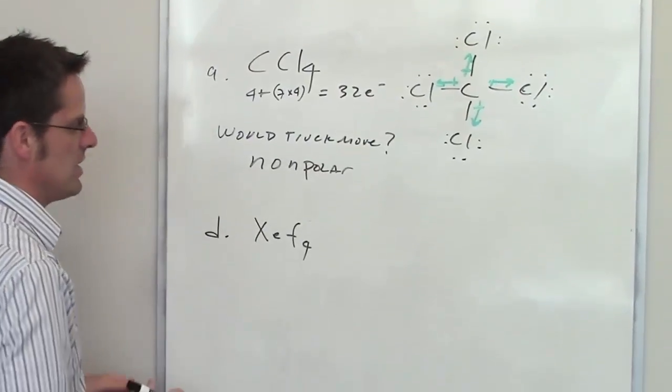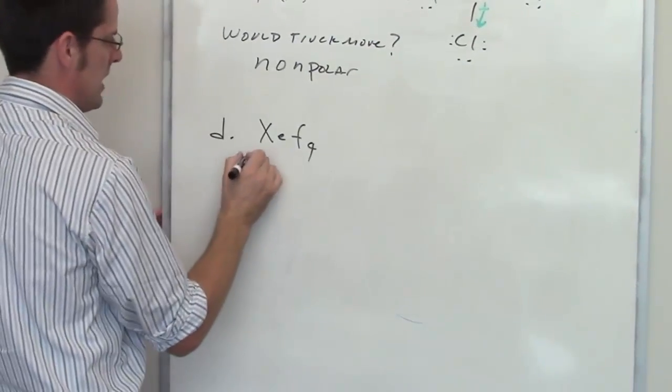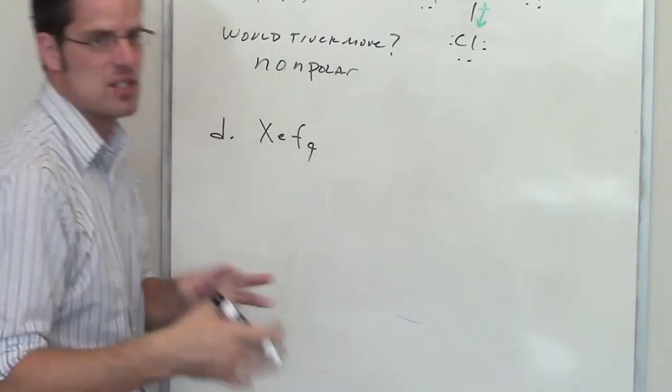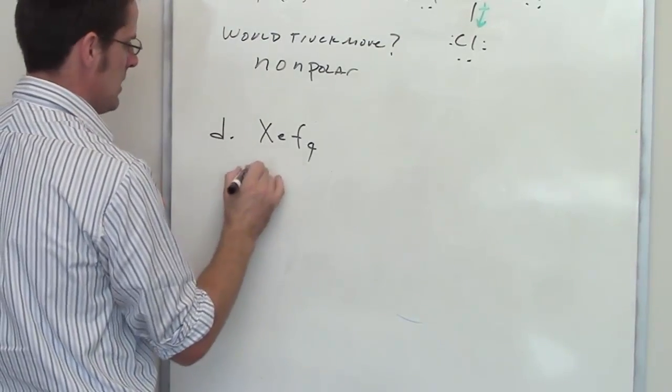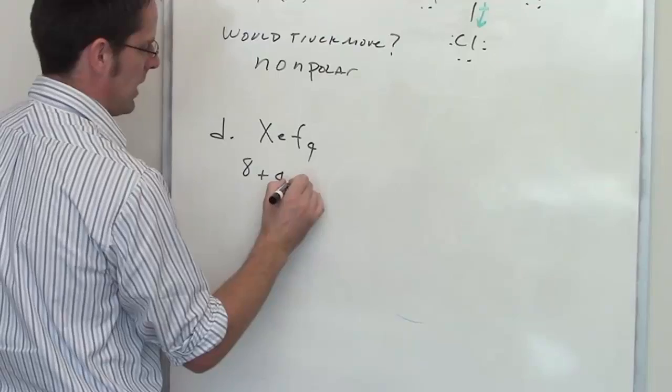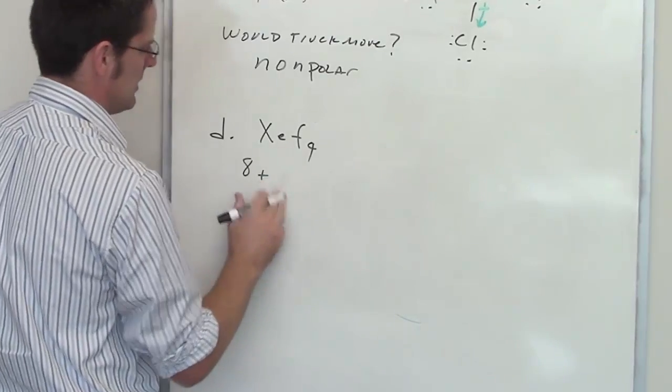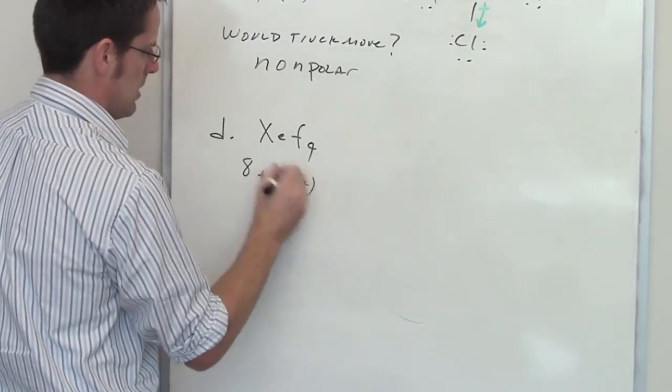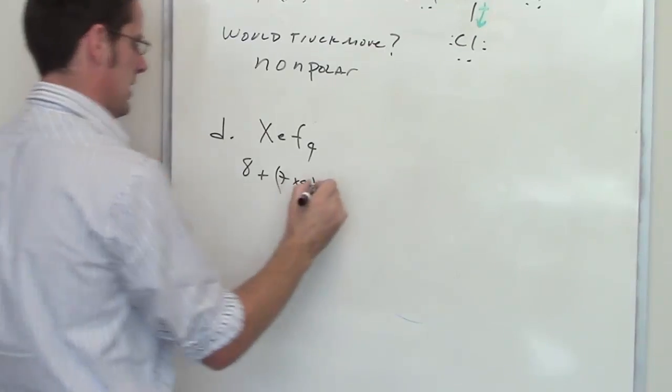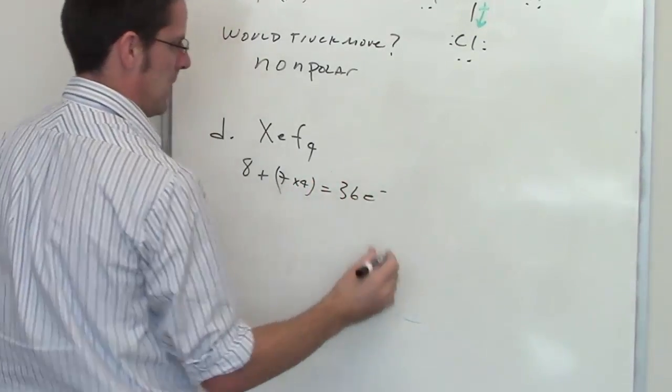Let's go ahead and do xenon tetrafluoride. Xenon is a noble gas, and it's one of the few noble gases that has the ability to bond with other atoms. So it has eight valence electrons, and each fluorine has seven valence electrons, and there are four of them.